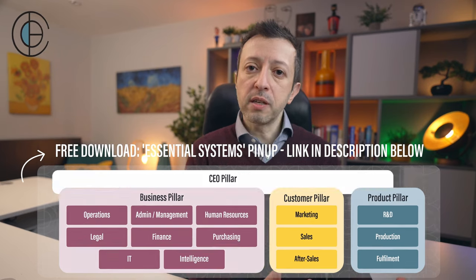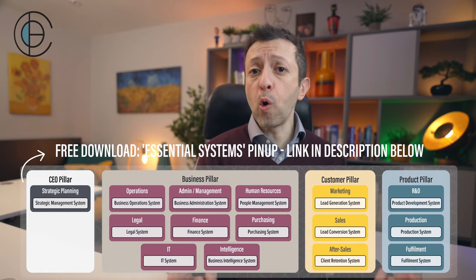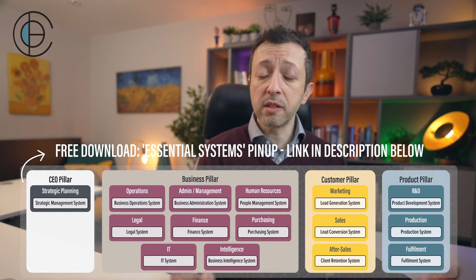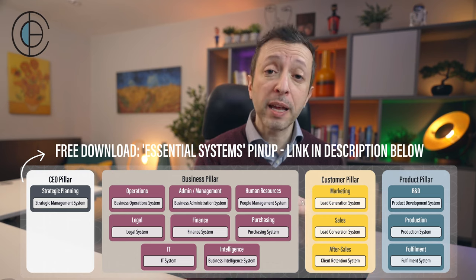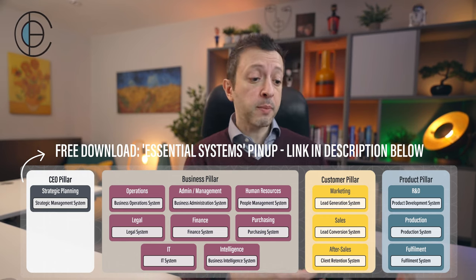Systems can have subsystems, and some people just call the subsystem a system — there's no right or wrong here, it depends on what makes the most sense to you. For example, within marketing you might have different systems: an online booking system for calls, a content management system that includes things like SEO and blog writing, and different subsystems within your overall marketing system.